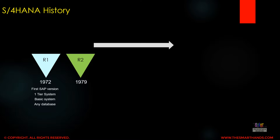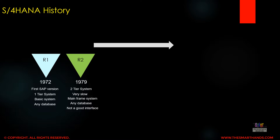In 1979 SAP launched R2, which was a two-tier system. It was better than R1 but still very slow. It was also known as the mainframe system at that time, and any database could be used for the R2 system. It also had a poor interface for connecting with external systems.